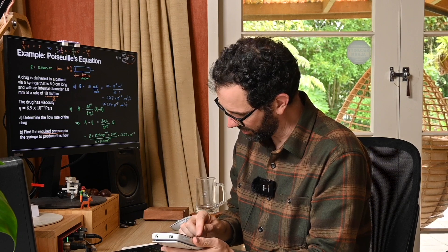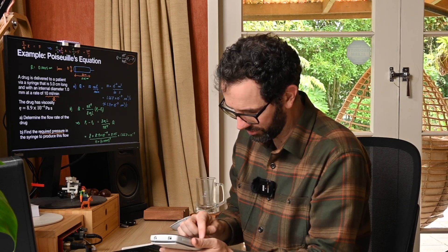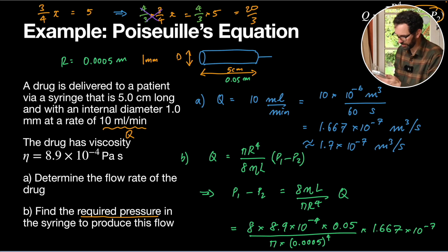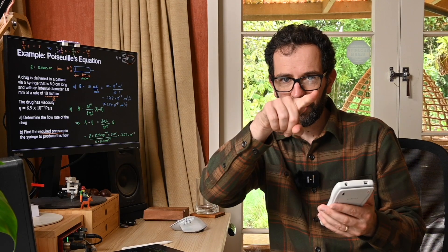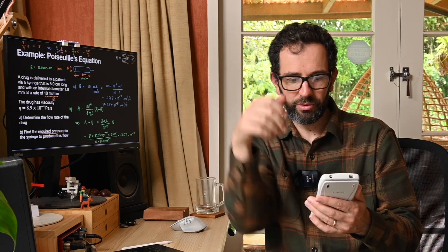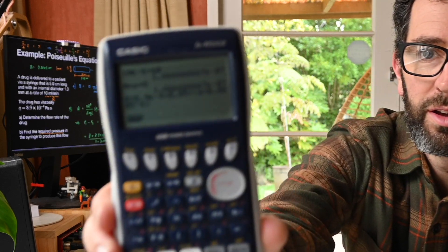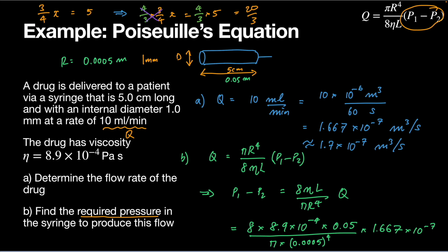It's going to be eight times 8.9 times 10 to the negative four times 0.05 divided by, now I need to make sure I open a bracket, pi times my radius 0.0005 to the power of four. Now on my calculator, the way to do power of four is with that little carrot, just like the top of a triangle symbol. So you can see that there, here we are so far. And with a bit of luck, we get something useful.